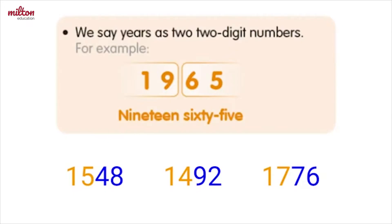This is just the beginning of how we say years in English. Now let's have a closer look at some more rules. Normally we say years as two two-digit numbers, like 1965 — these two numbers repel each other like magnets. The same applies to years like 1548, 1492, and 1776.